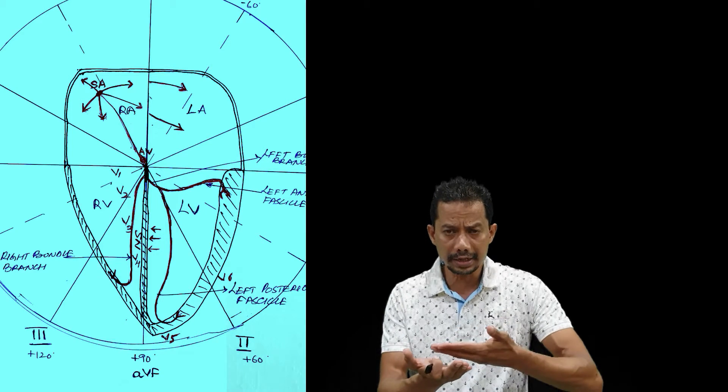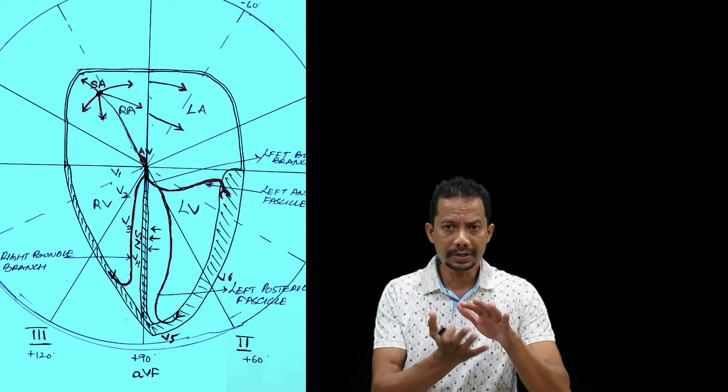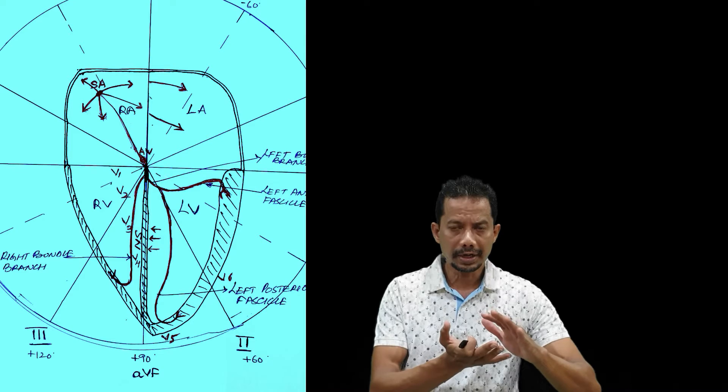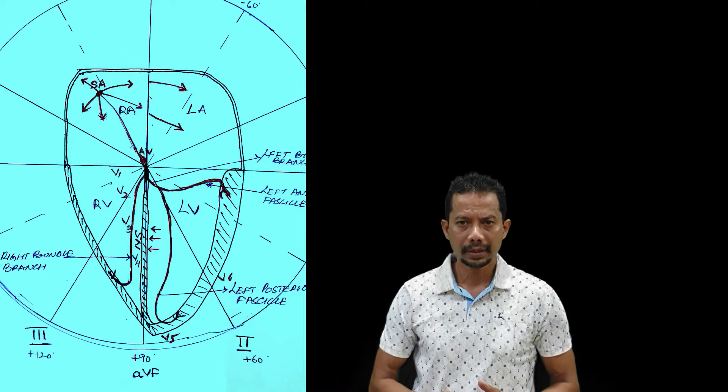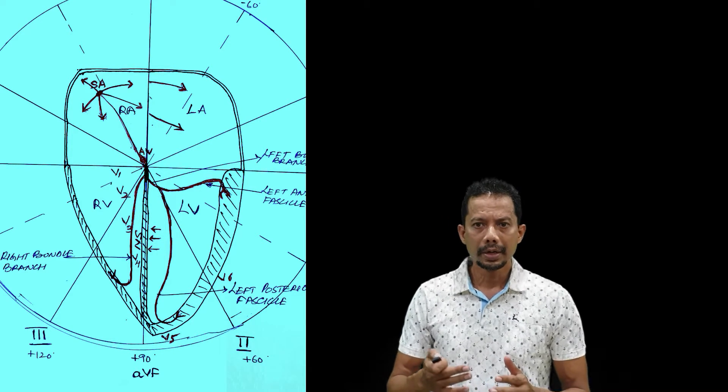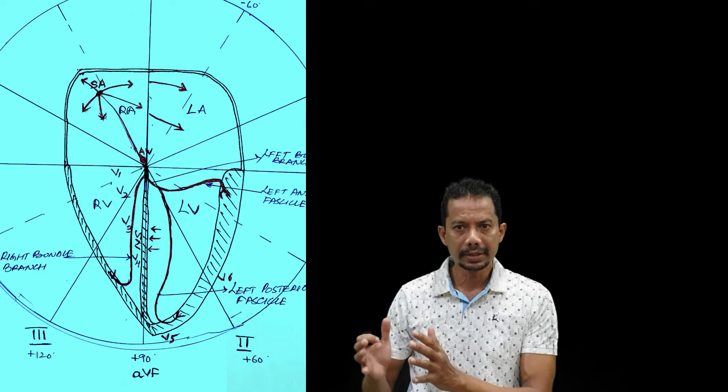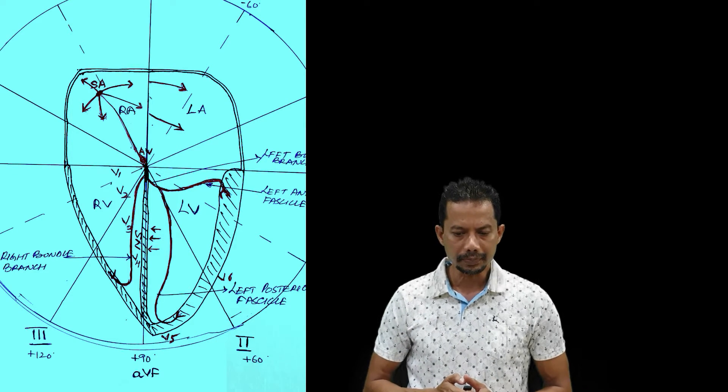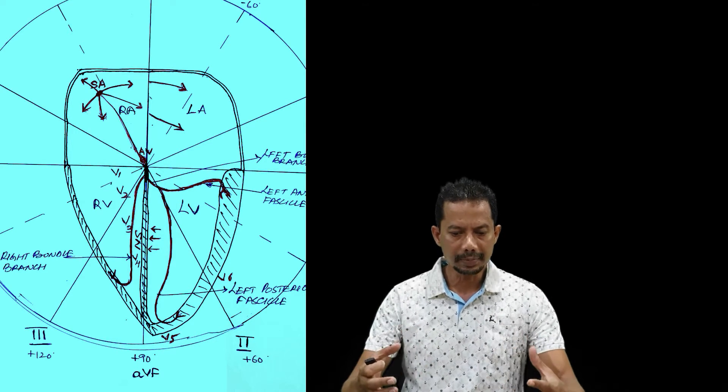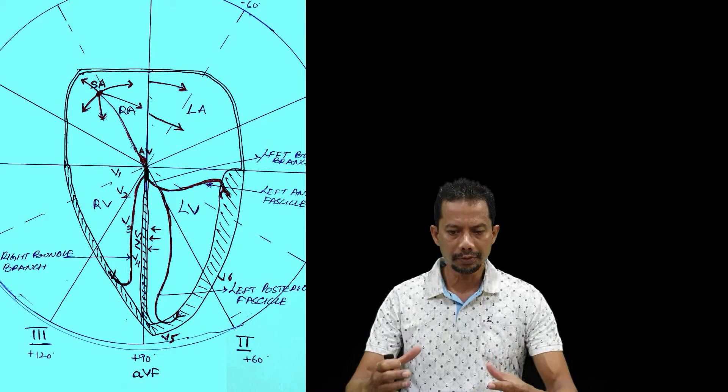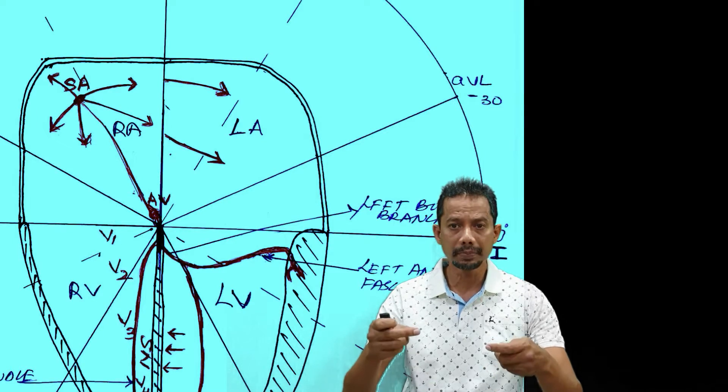In other words, the anterior wall of the left ventricle is formed by the IVS and the left ventricle. The left ventricle is bulky, so the more bulky muscle will give rise to more electrical impulses.